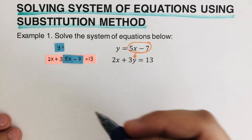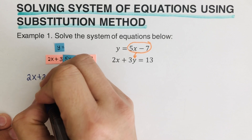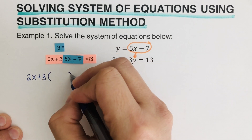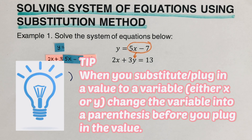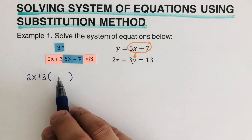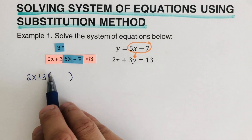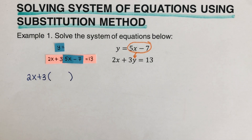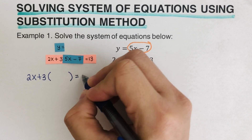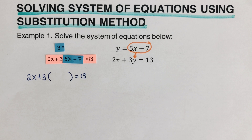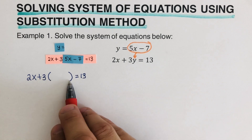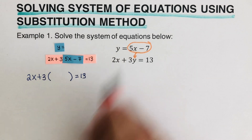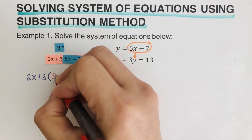So the equation that we have here would be 2x plus 3 — and then I put a parenthesis. Here's a tip: when we substitute a value to a variable, which can be either x or y, we change the variable first into a parenthesis before we plug in the values. So in this case, I changed the y into a parenthesis first so I don't mess up with the math. So then I can go ahead and set this equal to 13, and then plug it in. So that's the tip: change the variable first into a parenthesis before we plug in. So I'm going to put this 5x minus 7 here.